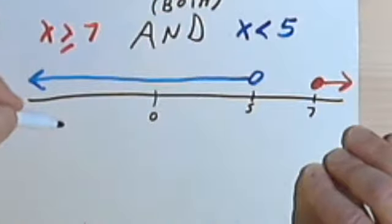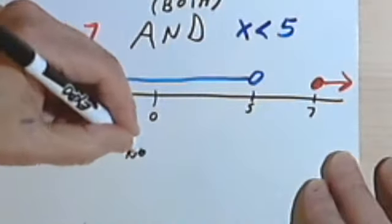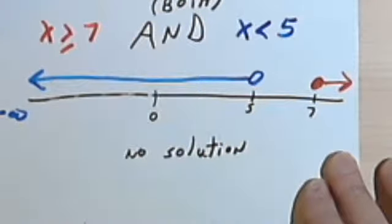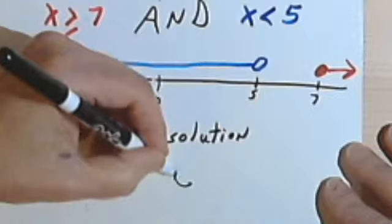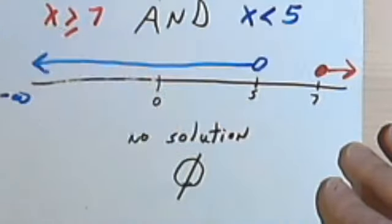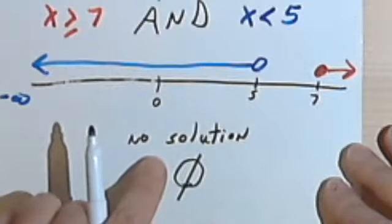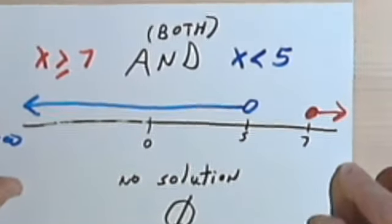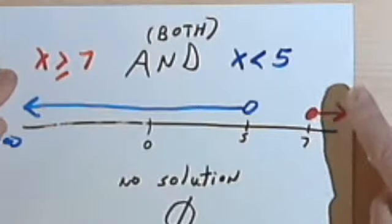So I can't even write an interval for this. Basically, I can either write something like no solution, because there is no solution to both of these at once, both of these inequalities. Or sometimes you will see somebody use this symbol. This is called the empty set symbol. And it means basically the same thing: there's nothing to report, nothing going on. So looking at these two, basically we end up with nothing.